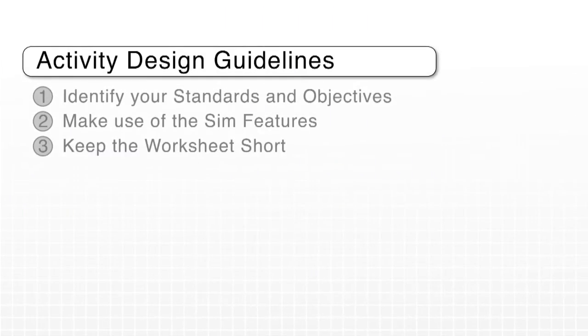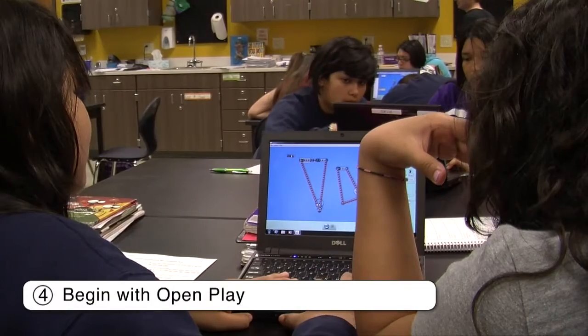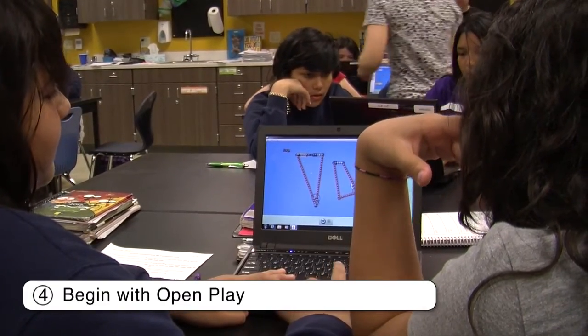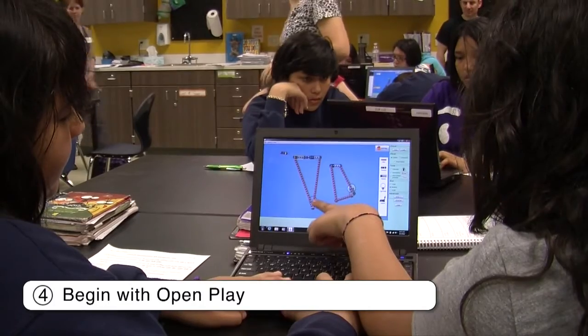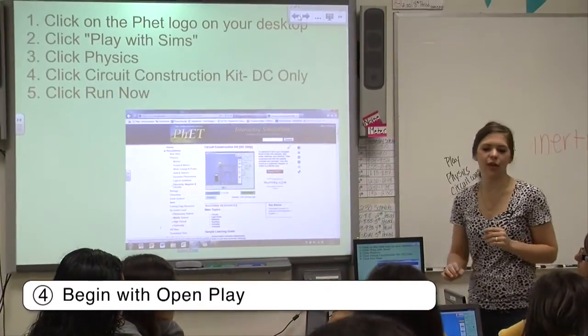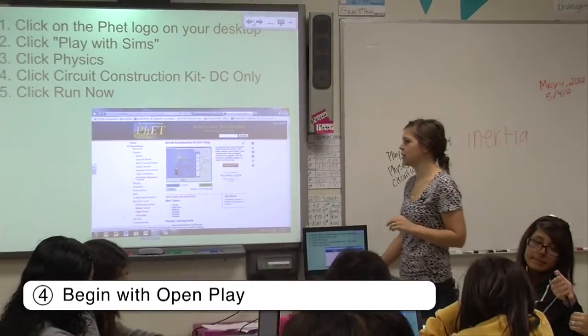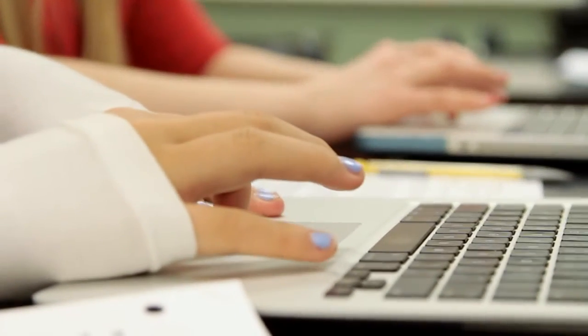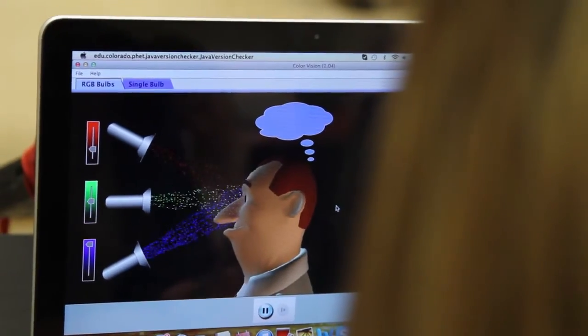Minimal wording can focus on the key concepts of the sim. Starting activities with about five minutes of open play can be very helpful in order to get students engaged. During open play, students explore the simulation without instruction, giving them the chance to explore features and begin asking their own questions. The simulations are designed to be intuitive and inviting, so students naturally want to explore. Giving students time to play means fewer questions about how to navigate the sim during the activity later.